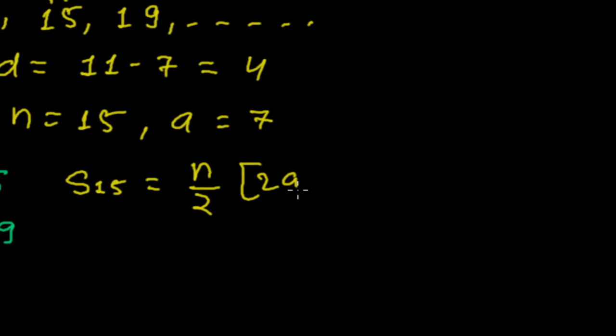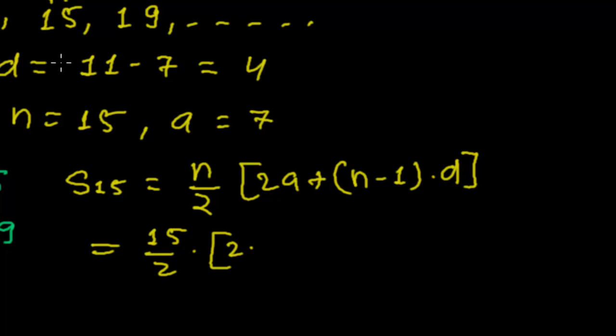The formula for sum of n terms is n/2 [2a + (n-1)d]. So S₁₅ equals 15/2 times [2 times a, the first term that is 7, plus (n-1), n is 15 minus 1, times the common difference which is 4].